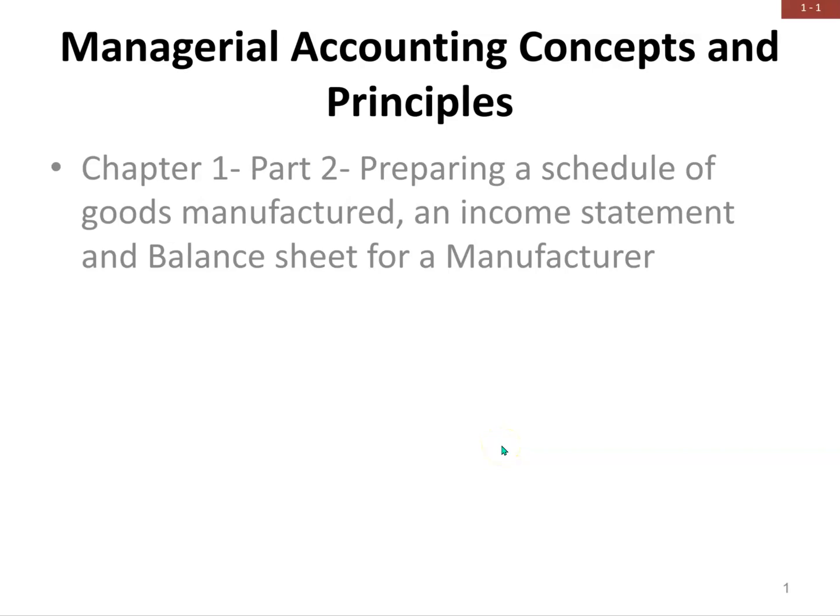Hello, everyone. Welcome to Managerial Accounting. This is still Chapter 1, Part 2. What we're going to do is walk through preparing a schedule of goods manufactured, what appears on the income statement and the balance sheet if you are a manufacturer — you make the goods, you buy raw materials, you add labor, you add other costs, you produce a product, and then you sell it. The process is a lot longer than if you were a service business or if you just bought goods and sold them.